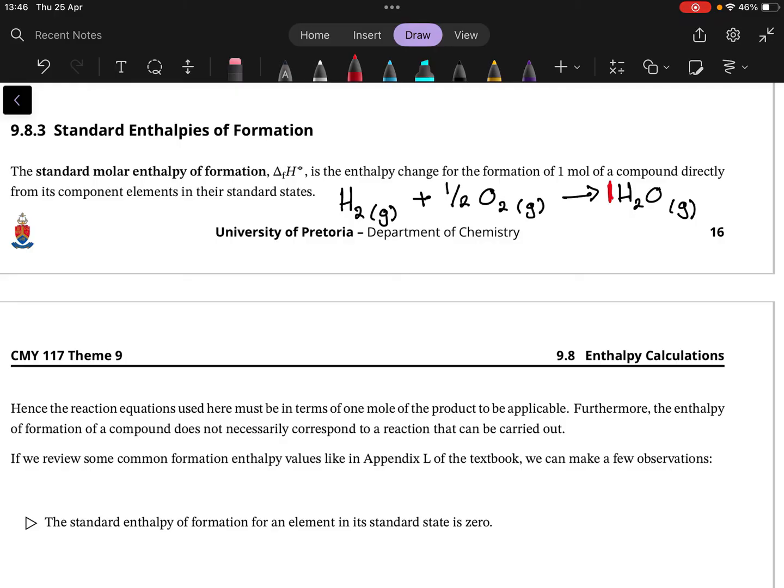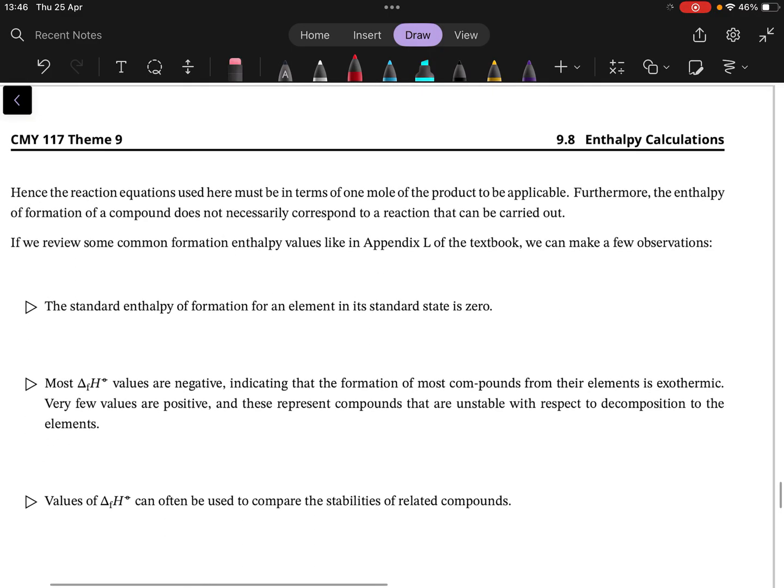But it forms one mole of the compound, so water is the compound we're interested in. It is formed from the combination of hydrogen and oxygen, and this is the balanced equation for one mole to form. Of course, you can multiply this equation by two to get the oxygen's half away, but then you form two moles of the compound.